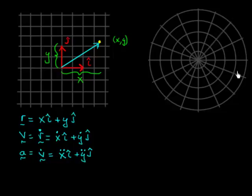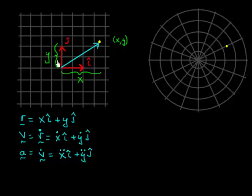In polar coordinates, the graph paper has circles and radial lines outward from the origin. Just like in Cartesian coordinates, I represent my point by two numbers. Instead of x and y, I'm going to use r and theta. r is the distance this point is outward from the origin — this is a scalar r, not the vector r. And theta is the angle this point makes relative to the horizontal.